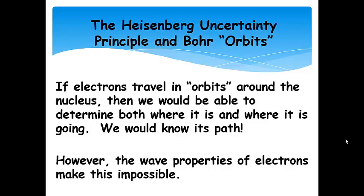This is where we come back to Bohr orbits violating the Heisenberg Uncertainty Principle. So, if electrons were to actually travel in orbits around the nucleus, then we would be able to know where it is and where it's going. We would know the path of the electron. However, the electron has wave character, and it's this wave character of electrons that makes this impossible. So, we cannot do that. And that means electrons do not follow paths around the nucleus. We would know both where it is and where it's going. And that is not possible.